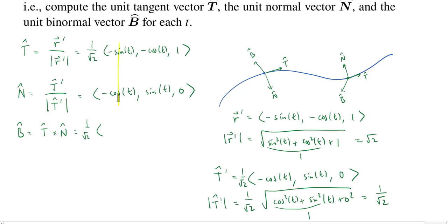To get the cross product, first cross off the first column and do a cross multiplication. So negative cosine of t times zero, which is zero, minus one times sine of t. So in total, we'll get zero minus sine of t. So negative sine of t.